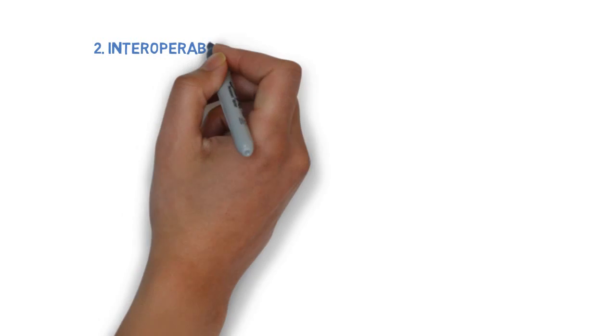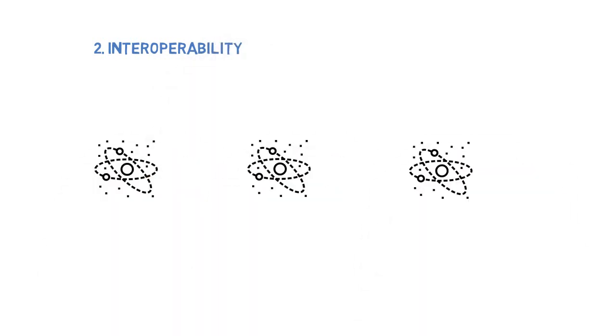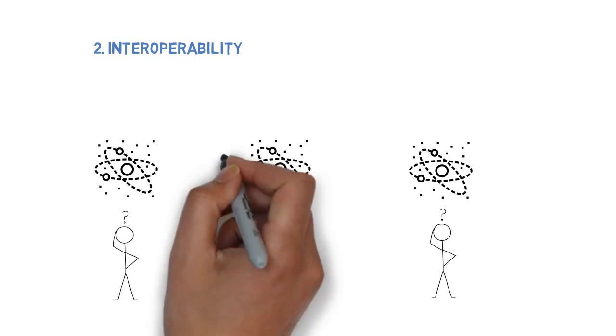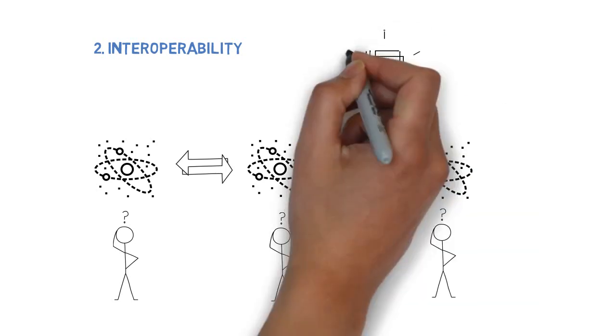The second problem is called interoperability. We have Bitcoin, we have Ethereum, and all the other platforms. They are sitting in silos. They don't know the existence of others. So we want to build a bridge in between so that the value can flow smoothly from one platform to another. This idea is very similar to the Internet of Things, the IoT concept.